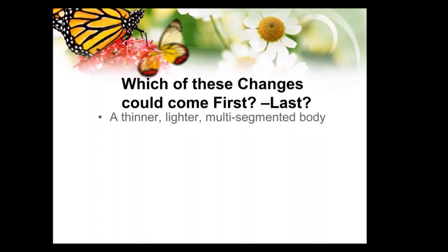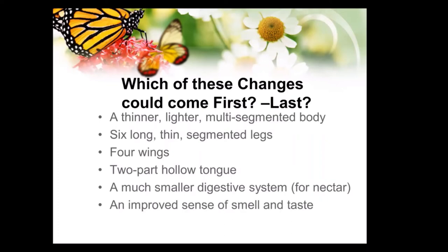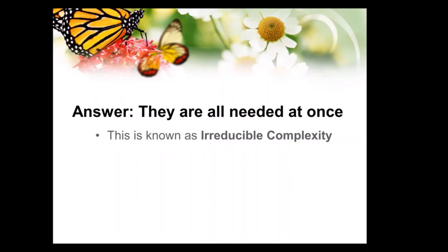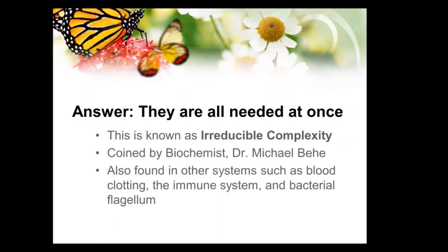We've got all these things: a lighter body which is more aerodynamic, designed for flying rather than crawling; long legs; four wings; the proboscis tongue; a smaller digestive system; improved sense of smell, taste, and sight. They're all needed — we can't really choose which one came first, and we can't really decide which one was least important and came last. This is a concept called irreducible complexity — they're all needed at once. It was coined by biochemist Dr. Michael Behe. He wrote a book called Darwin's Black Box, about how all these things come together. The evolutionary approach is, well, it just happened, we don't have a mechanism, we're still studying it. But it's inconceivable how these would come together.